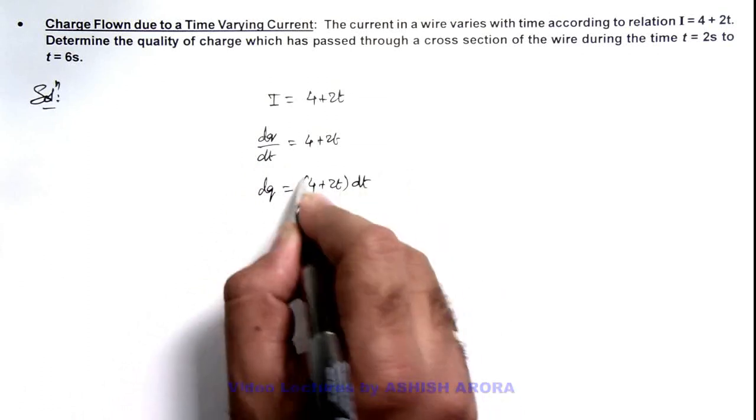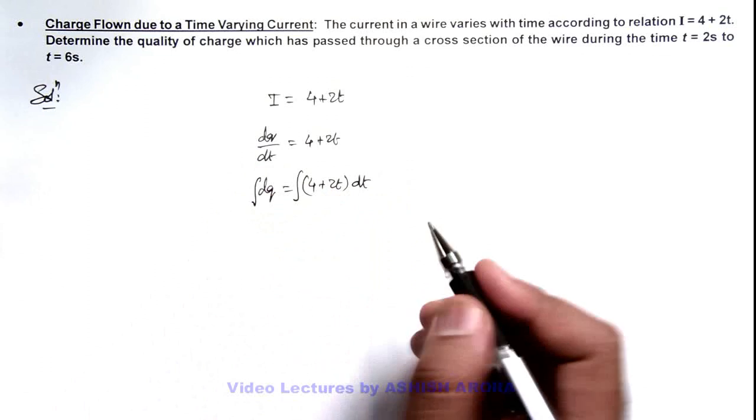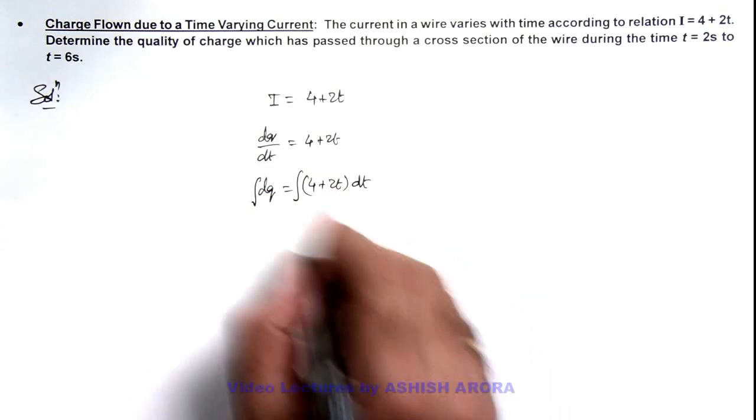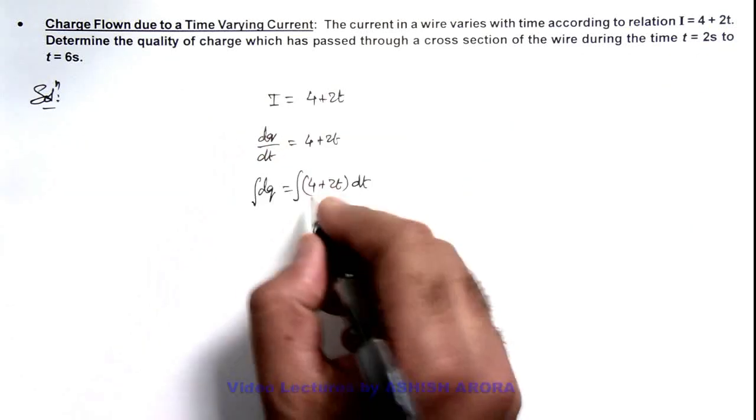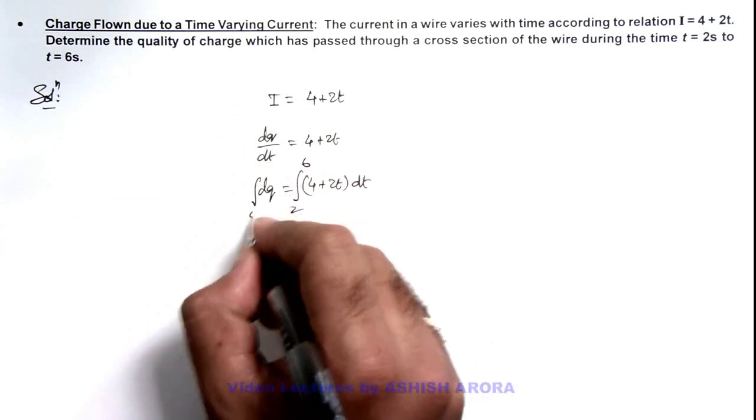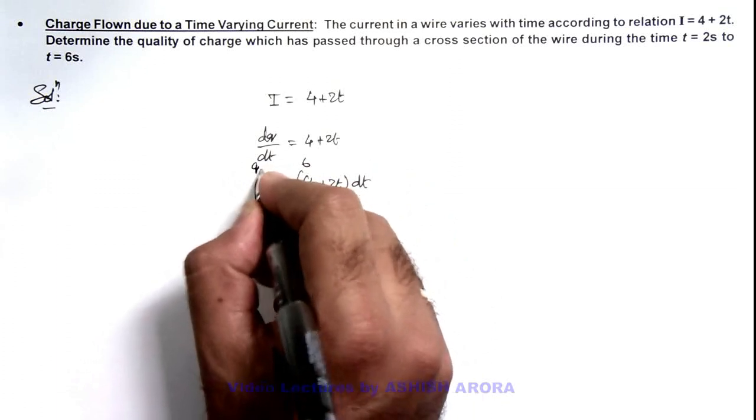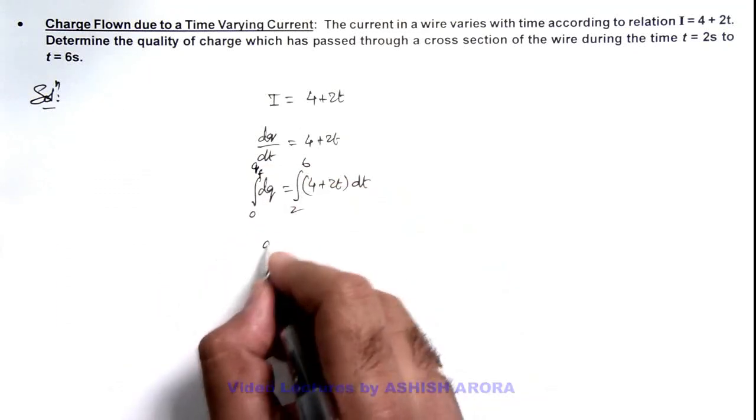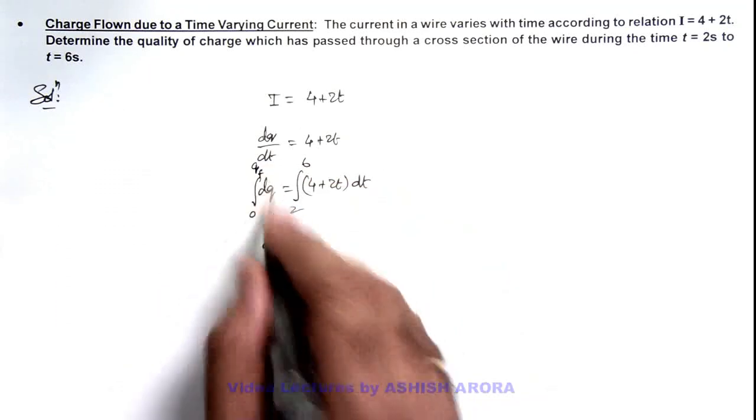So if we integrate this to calculate the total amount of charge flown, then we can integrate it within time limits from 2 seconds to 6 seconds, and the amount of charge which is flown is 0 to qf. So this will give us qf, the total amount of charge flown.